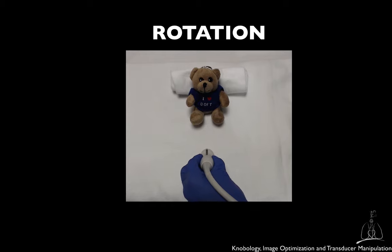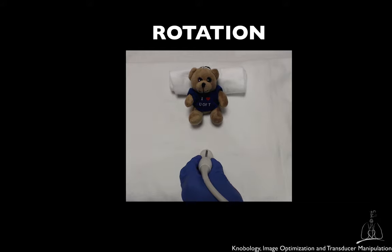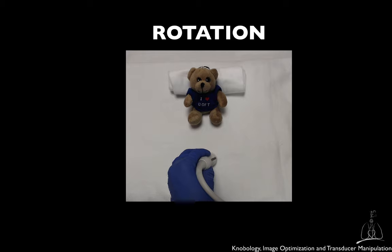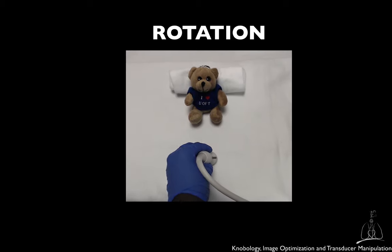The relative position of the probe indicator provides spatial orientation for this type of movement. For example, when the marker is directed cephalad, it is considered facing 12 o'clock. A 90-degree clockwise rotation of the transducer will determine a turn of the marker from 12 o'clock to 3 o'clock.